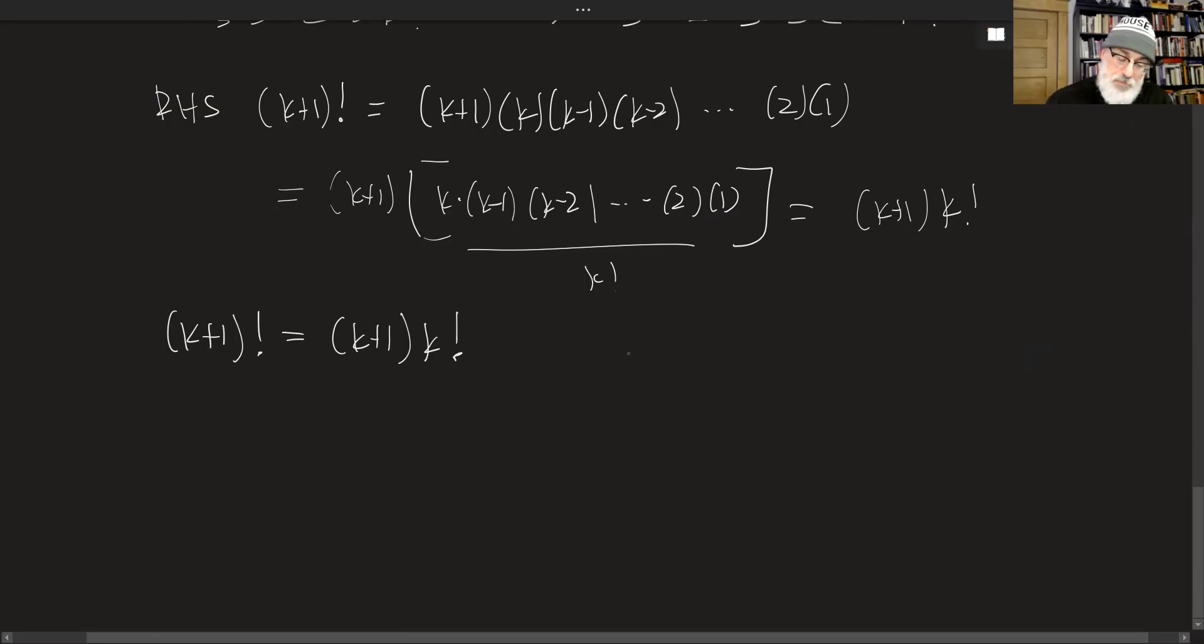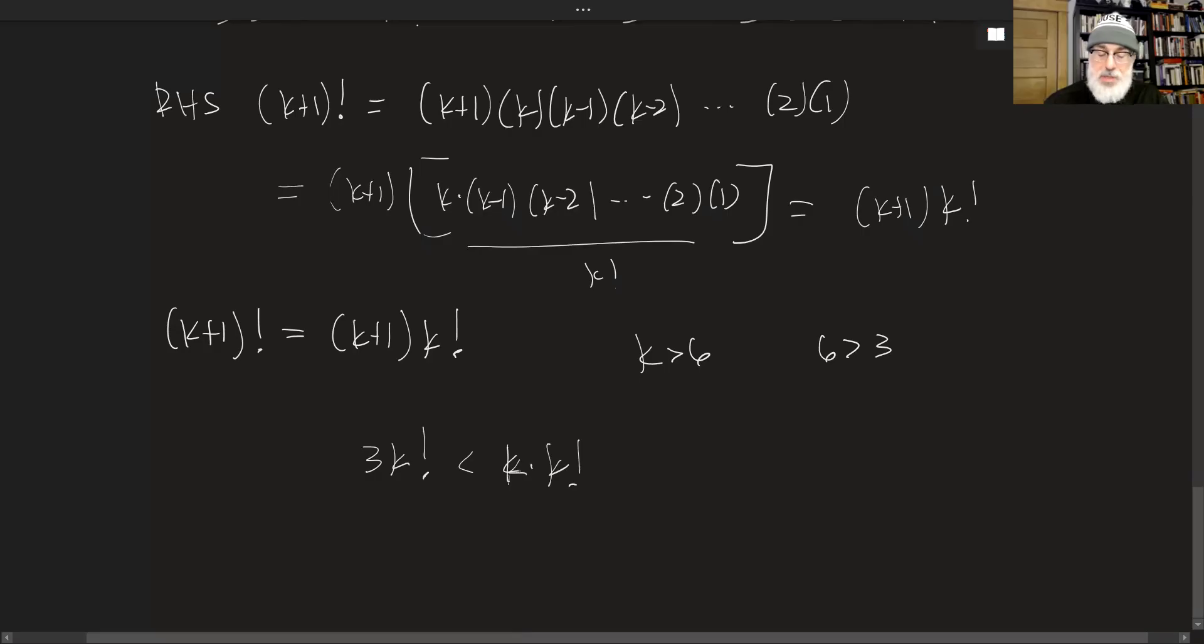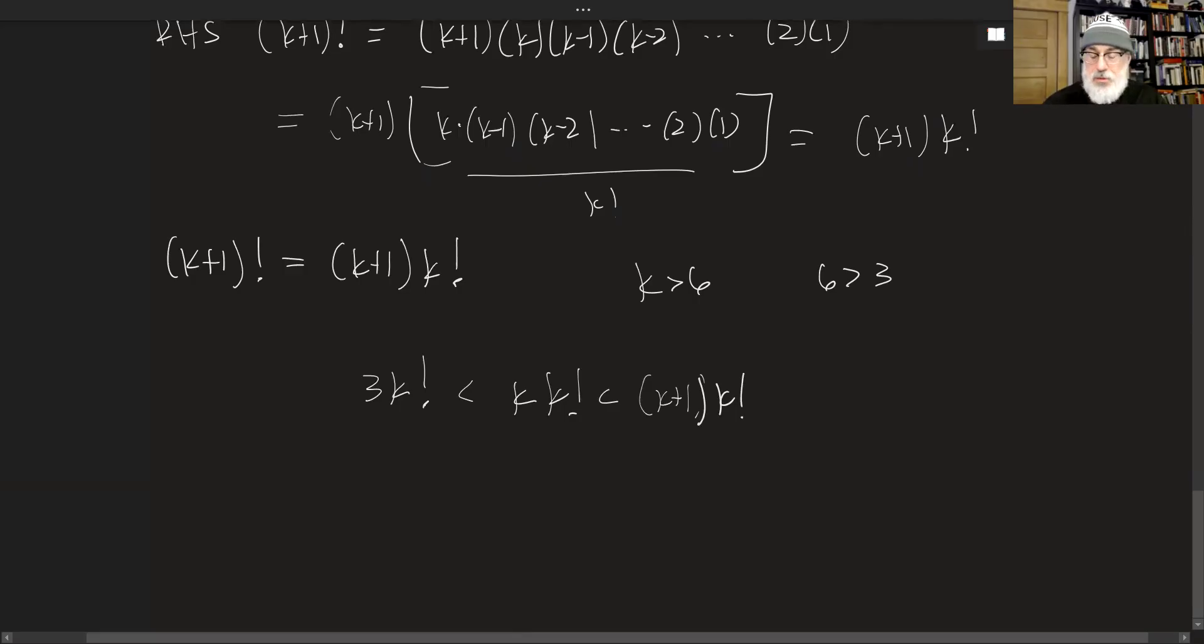Okay, getting there. Now, k is greater than 6. So which means that whatever we pick for k, it's going to be greater than 6. And obviously, 6 is greater than 3. So when I have 3k factorial, this will be less than k times k factorial. Because k will be at least 7. And this will certainly be less than (k+1) times k factorial. Since k+1 has to be at least 8. So 3k factorial is less than k times k factorial is less than (k+1) times k factorial.